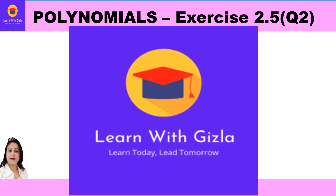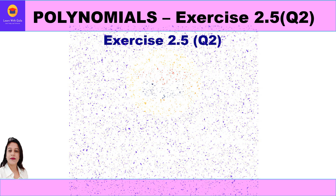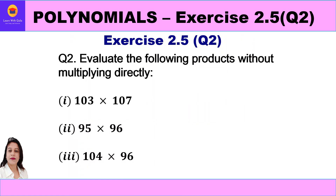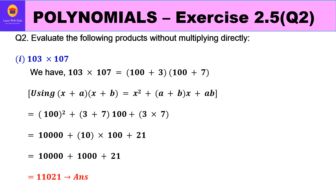Hello dear students, welcome to YouTube channel Learn with Kizla. In this video on polynomials we shall continue with Exercise 2.5 — specifically Question 2. Question 2 says: evaluate the following products without multiplying directly. So we have to find the product of these numbers without multiplying them, which means we have to use suitable identities.